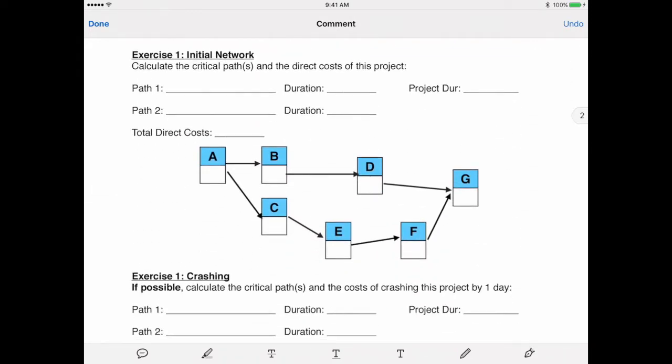In this particular case, it looks like we have two paths for our network. Let's take a look at each of these. So we have A, B, D, and G, and we also have A, C, E, F, and G. Now what I'm going to do is I'm just going to put in my durations into these boxes so I can calculate out which is going to be the longest path through this network.